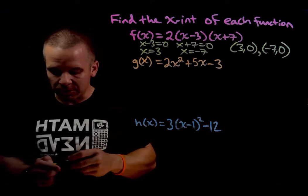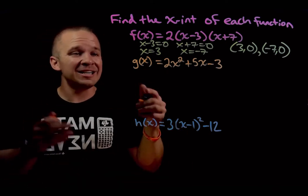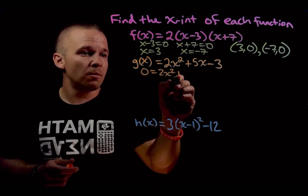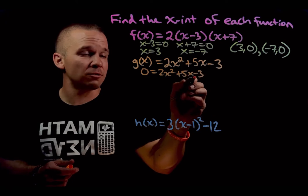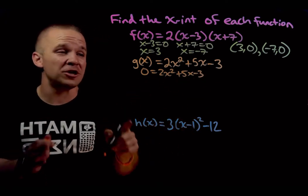One down, two to go. Next one, perhaps the trickiest one because of this lead coefficient. I need to set this function equal to zero. So I'll have zero equals two x squared plus five x minus three. Now I need to factor this thing. With a lead coefficient, it can be kind of tricky.